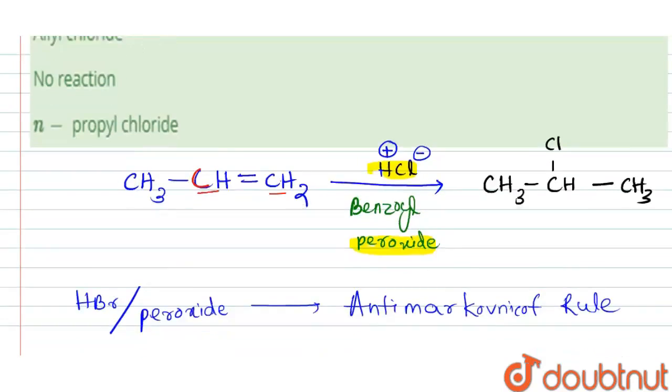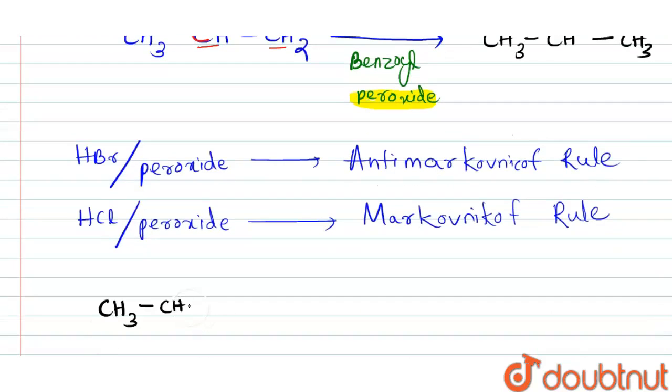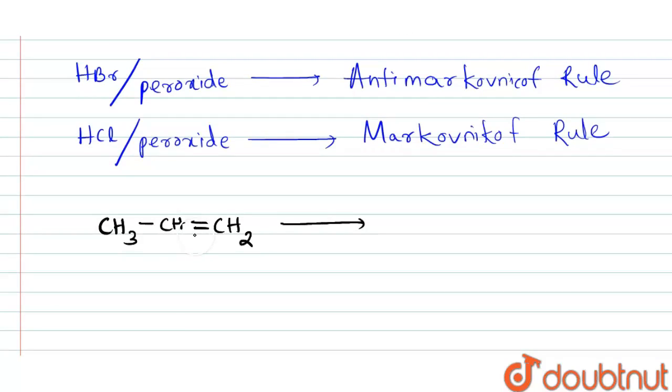If we see the mechanism: CH3-CH=CH2, propene, when reacts with hydrogen chloride, this double bond acts as a nucleophile and will attack this H+. Hence the carbocation will be formed like this: CH3-CH+ and here it is CH3. This is a secondary carbocation.